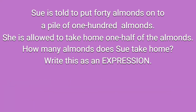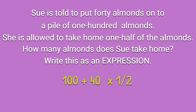Back to Sue and her almonds. She is being asked to add 40 almonds to 100 almonds. Then it says she is allowed to take home one half of the almonds. One half means multiplying by a half, so let's multiply that by a half. This is where we have to use PEMDAS and our order of operations really carefully, because if we calculate that expression, we're actually going to be adding 100 to one half of 40, and our answer would be 120.